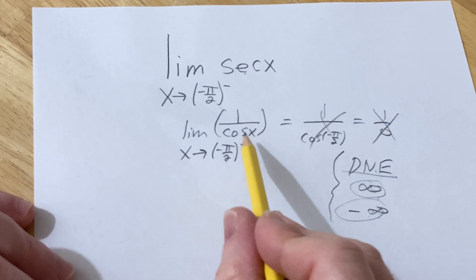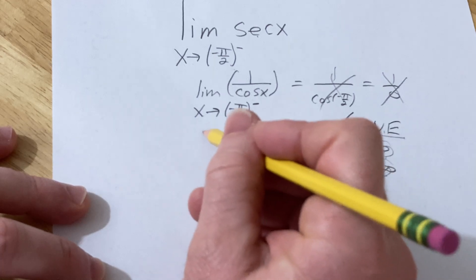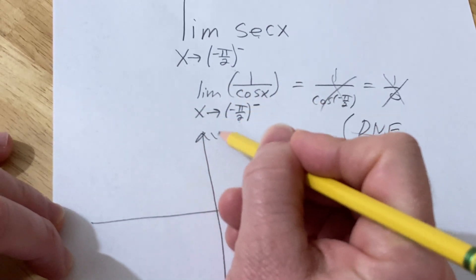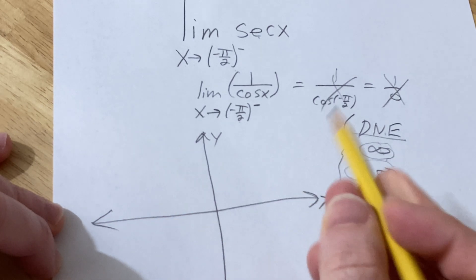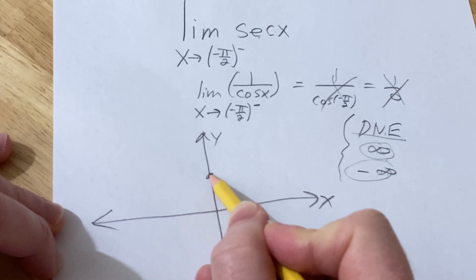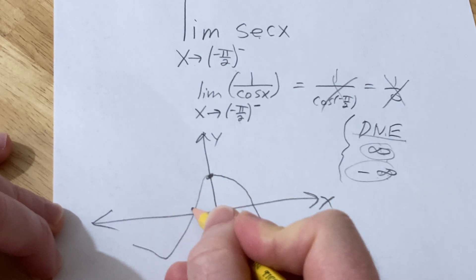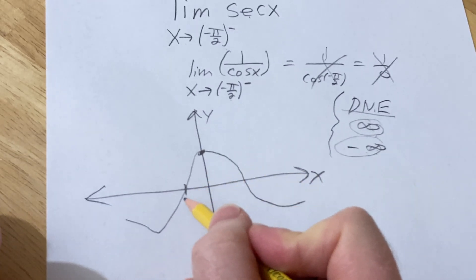To figure out what's going on here, let's think about the graph of cosine. Here's the y-axis, here's the x-axis. Cosine of 0 is 1, cosine of pi over 2 is 0. And here's negative pi over 2, which is what we're interested in.